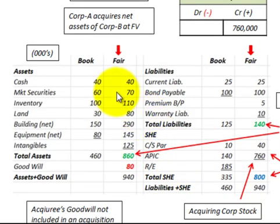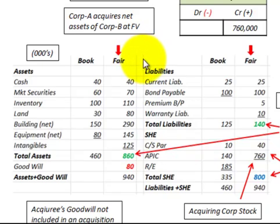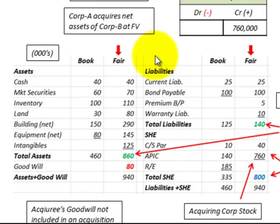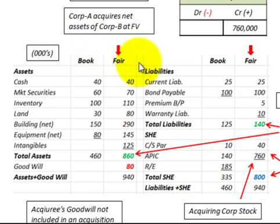Accounting for the acquisition method is based on the fair value of the assets and liabilities being acquired. We must identify all the assets and liabilities involved and determine their fair value at the acquisition date. Looking at Corp B's balance sheet, I have set up both the book value and the fair value of the assets and liabilities.